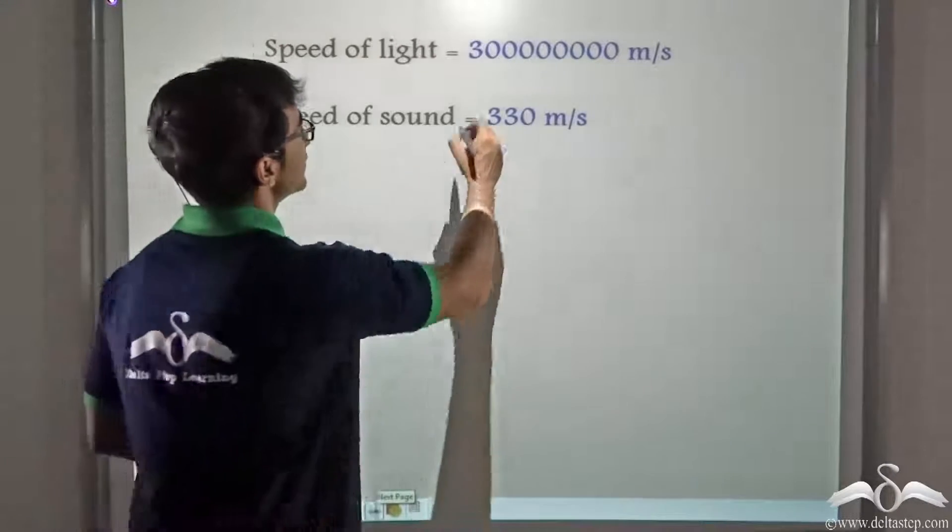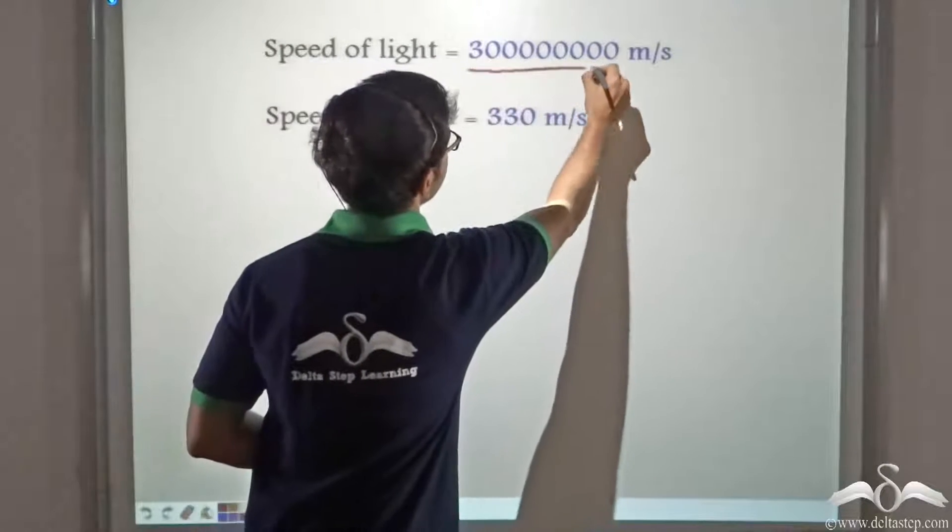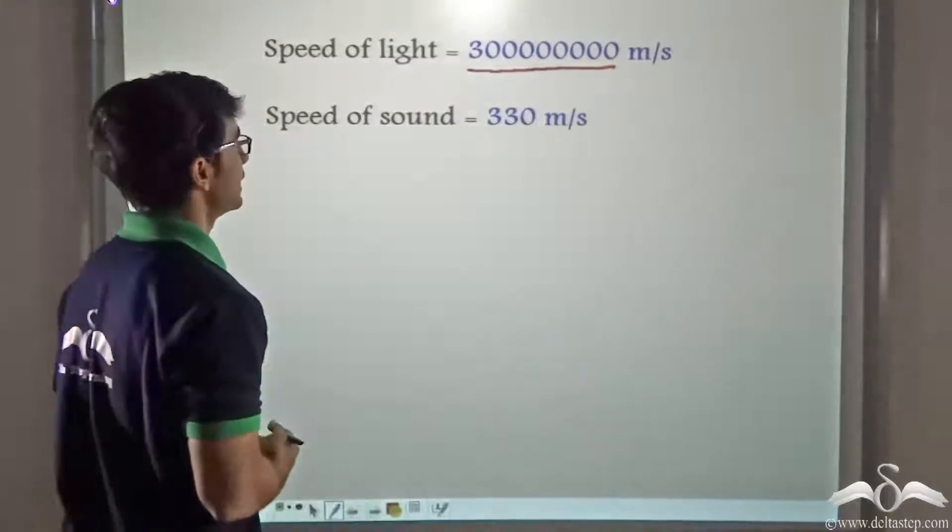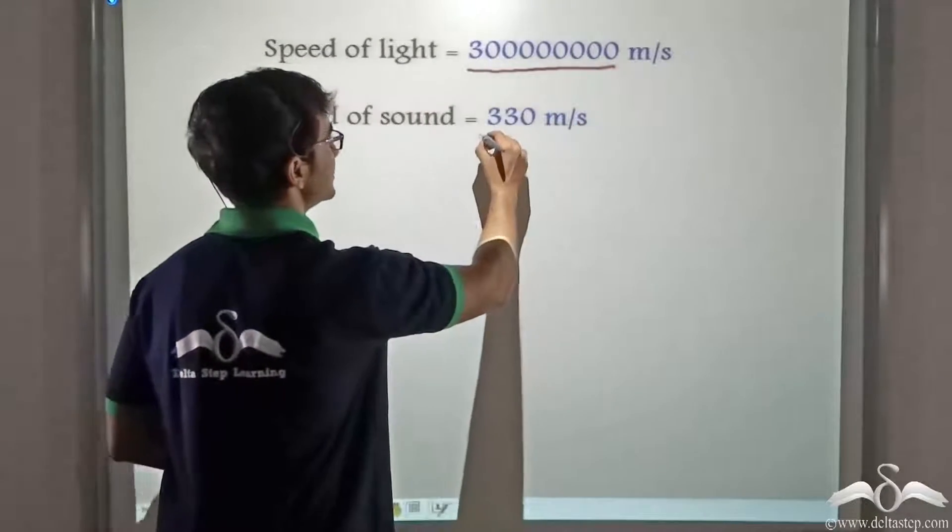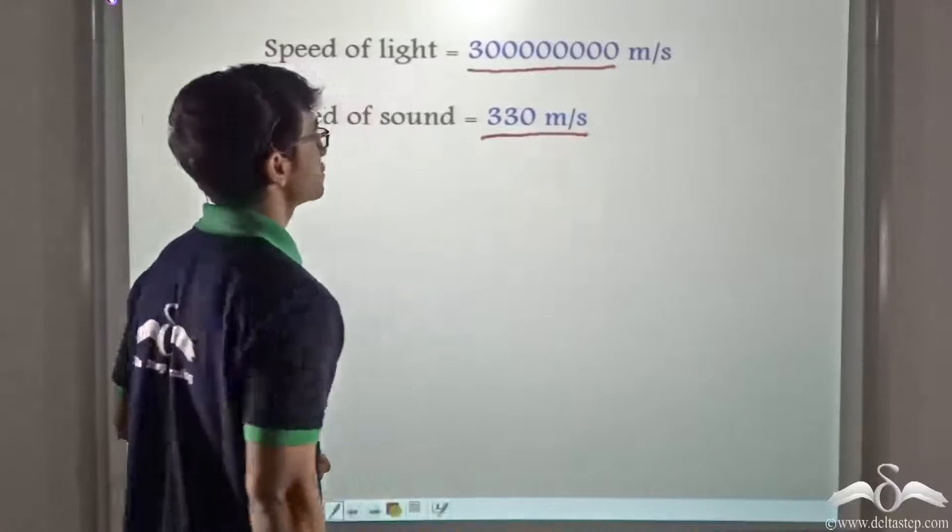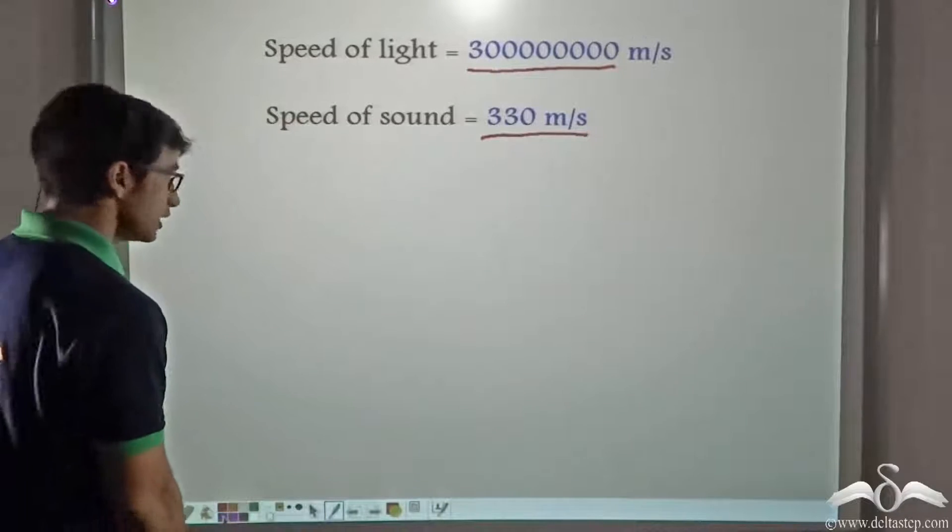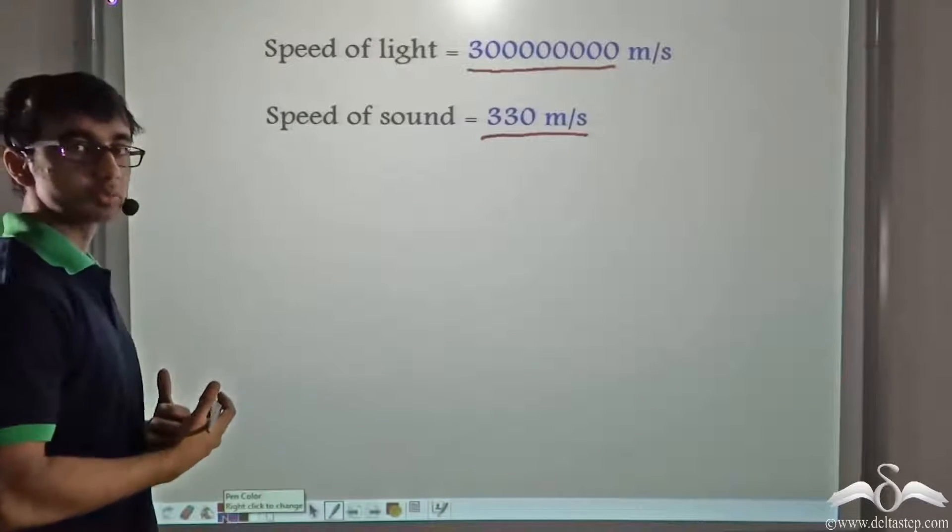The speed of light is 3 into 10 to the power 8 meters per second and the speed of sound is 330 meters per second. So if you have to compare these two speeds, let us find out how to do.